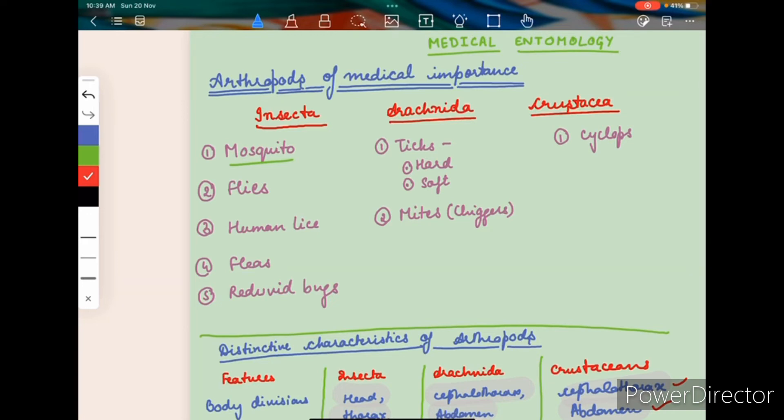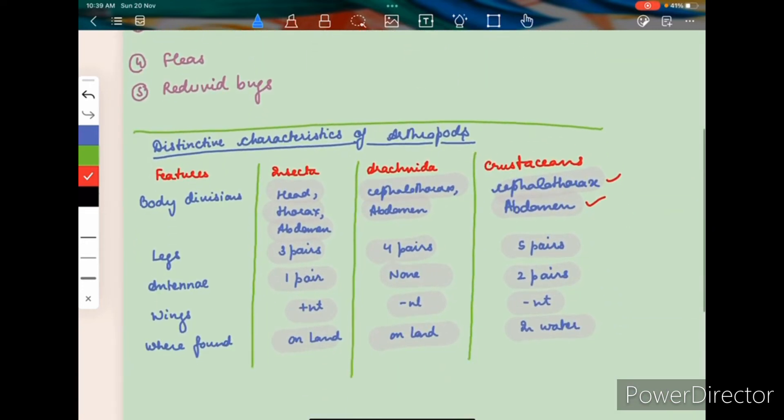The mosquito falls under the Insecta category. Now we need to differentiate between the Insectas, Arachnidas, and Crustaceans. These are three broad categories of the arthropods.